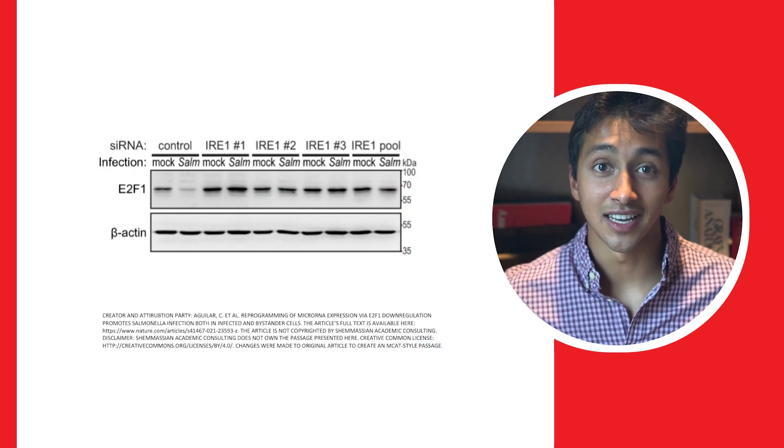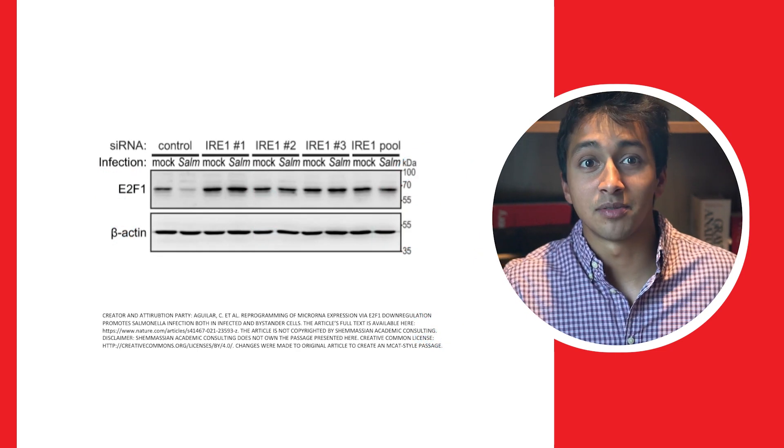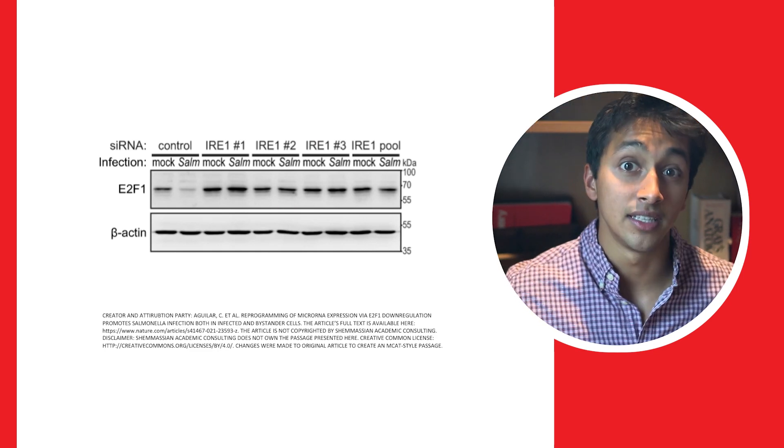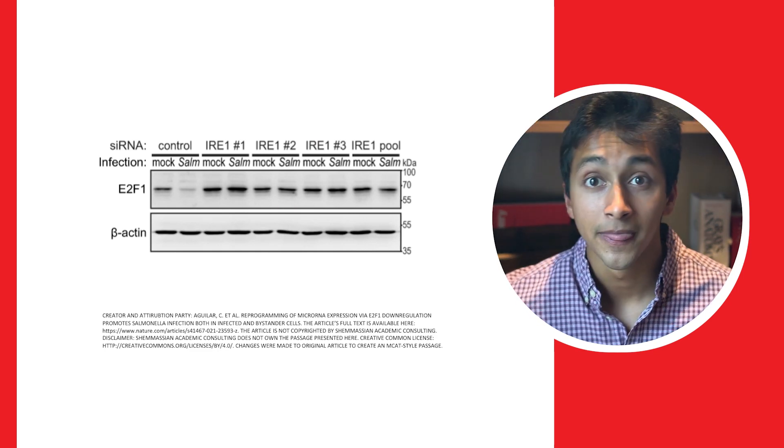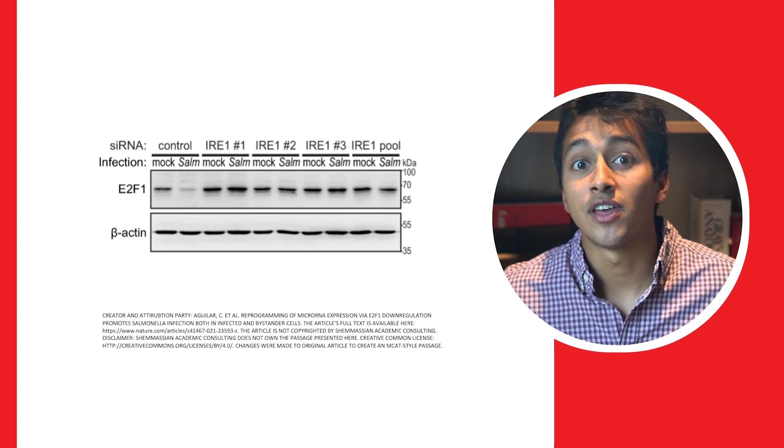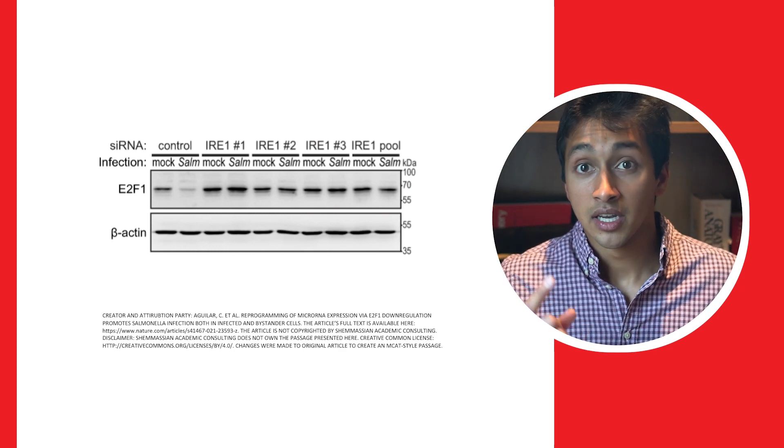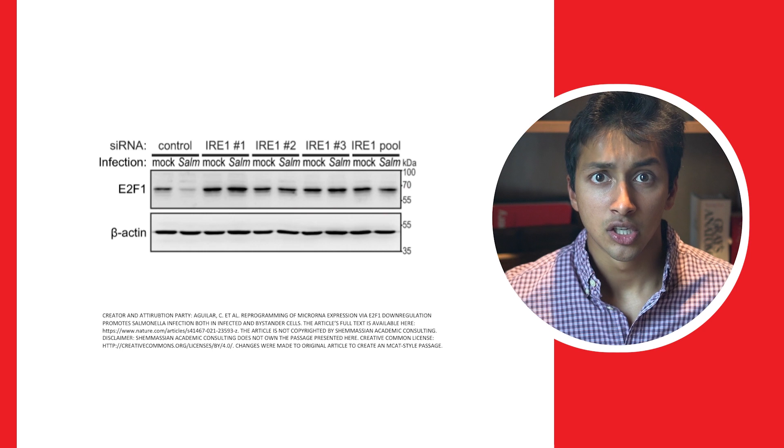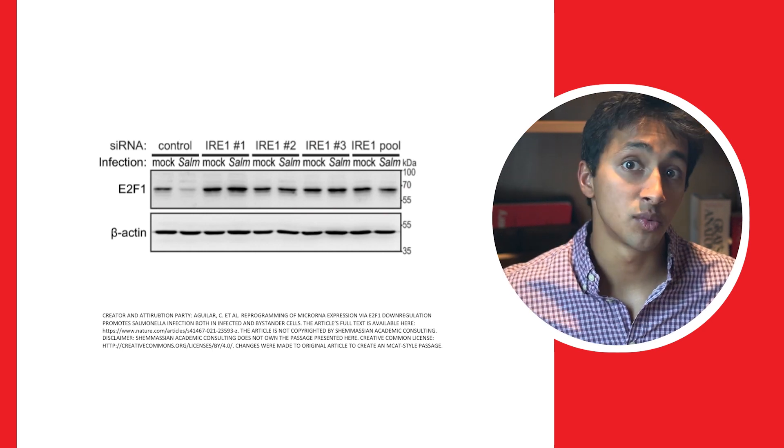Here's an example of what a Western blot looks like. We won't cover the specific steps for how to process a sample and conduct the gel electrophoresis in this video. Instead, we're going to focus on how the MCAT will ask you to identify the results of a Western blot quickly and accurately. So let's break down the anatomy of this Western blot.